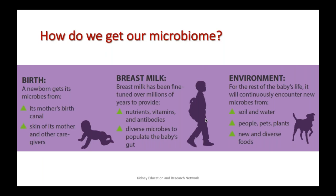How do we get our microbiome? The microbiome acquisition process starts at the time of birth. A newborn gets its microbes from its mother's birth canal and also from the skin of its mother and the other caregivers who almost immediately pick up a baby after it is born. The next source of microbial colonization comes from breast milk, which has been fine-tuned over millions of years to provide nutrients, vitamins and antibiotics, but it also provides diverse microbes to populate the baby's gut. The third important source is the environment, as for the rest of the baby's life it will continuously encounter new microbes from soil and water, people, pets, plants, and new and diverse foods.